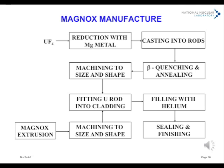Magnox manufacture, now ceased, involves reducing uranium tetrafluoride to metal with magnesium and casting it into rods. The crystal form of uranium stable at low temperatures is unusual in that on heating it contracts along one axis and expands along the other two, with undesirable effects during thermal cycling if the crystals should happen to be aligned. Accordingly, the rods were heated to transform the metal into a more conventionally behaved crystal structure — the beta phase — and suddenly quenched to freeze it, then annealed to relieve internal physical stresses. After machining to final shape, they were fitted into separately prepared Magnox sleeves, the internal spaces filled with helium, and sealed. Finally, fittings were attached as required for the particular reactor.